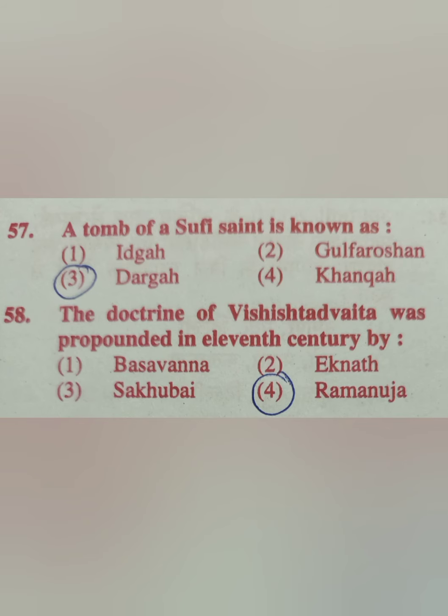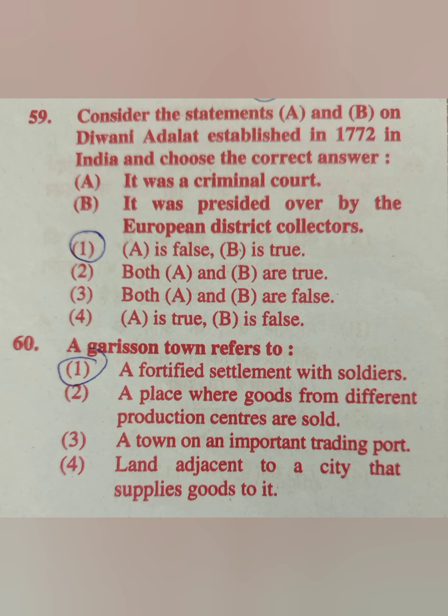Question 57: A tomb of a Sufi saint is known as — the answer is dargah, so the correct answer is option number 3. Question 58: The doctrine of Vishishtadvaita was propounded in the 11th century by — options: Basavanna, Sakubai, Eknath, Ramanuja. The correct answer is Ramanuja.